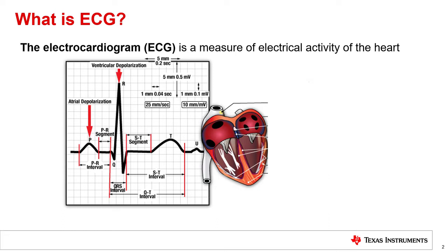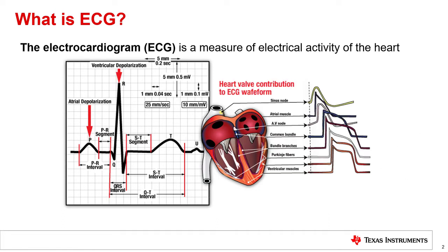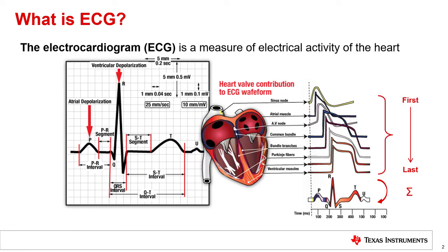Oxygenated blood then returns to the heart and is pumped back out to the systemic circuit. During each heartbeat, the cardiac muscle tissue contracts in a specific sequence in order for the blood to flow in the proper direction, passing from one chamber to the next. The contraction of each segment in the heart produces its own depolarization waveform. The summation of each of these contractions produces the final resulting waveform. This waveform has unique characteristics which are very identifiable, even to non-physicians. By observing the period between repeated segments of the waveform, you can easily determine a person's heart rate.